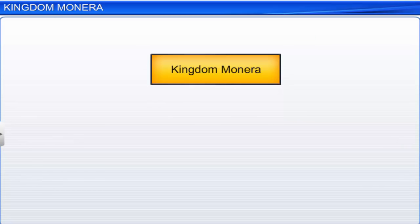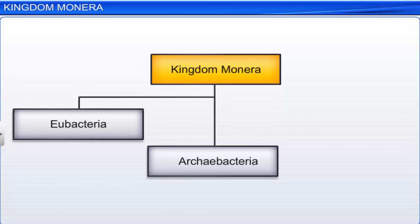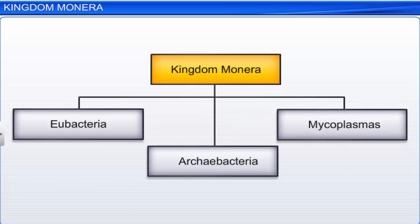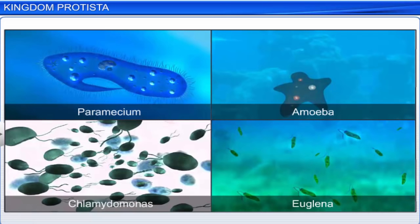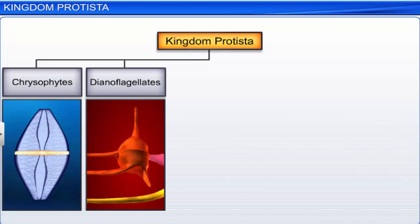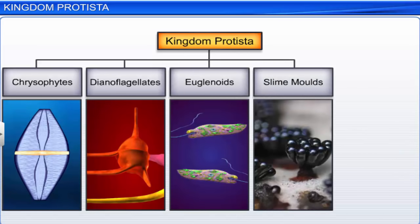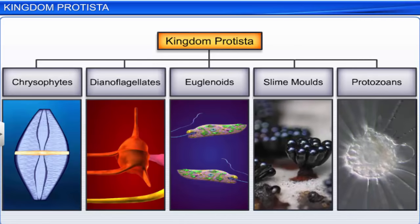Kingdom Monera therefore consists of eubacteria and archaebacteria. Members of kingdom Protista are primarily aquatic. Chrysophytes, dinoflagellates, euglenoids, slime molds, and protozoans are a few categories of protists. Since they are all eukaryotes, they contain a well-defined nucleus and other membranous organelles.